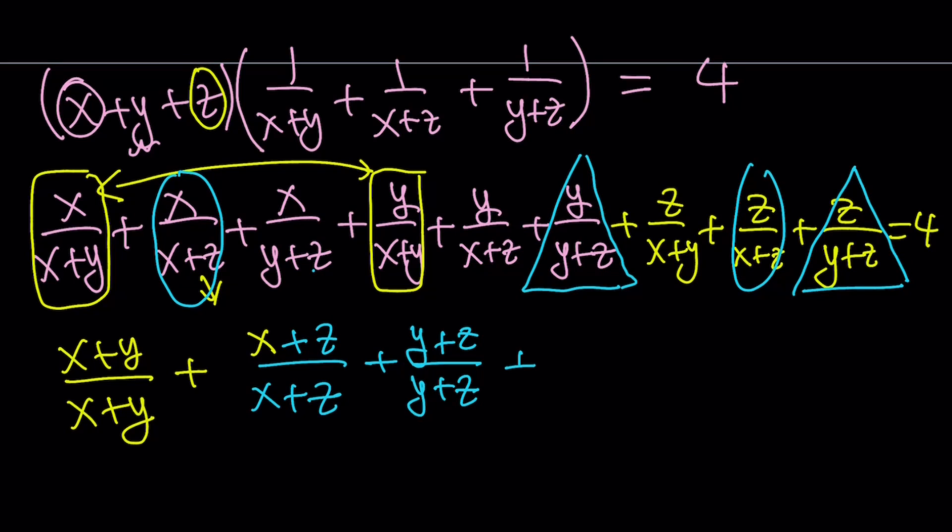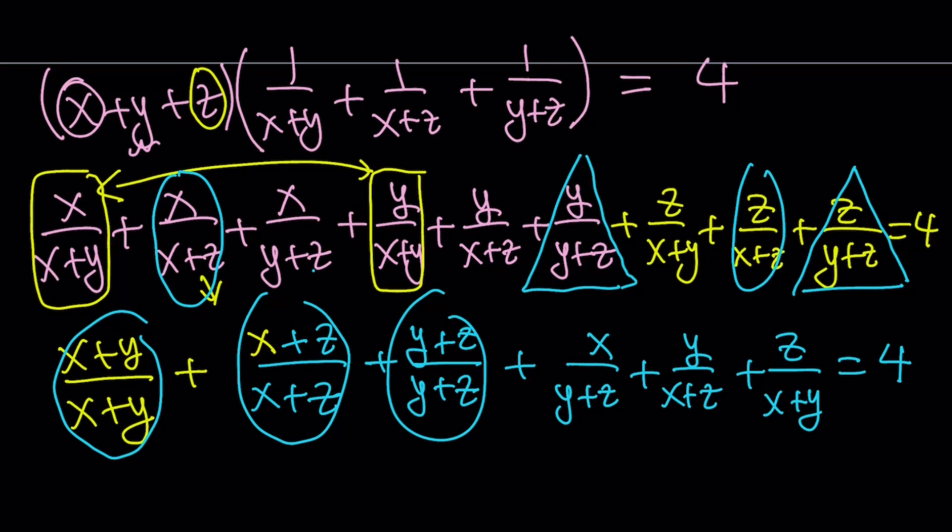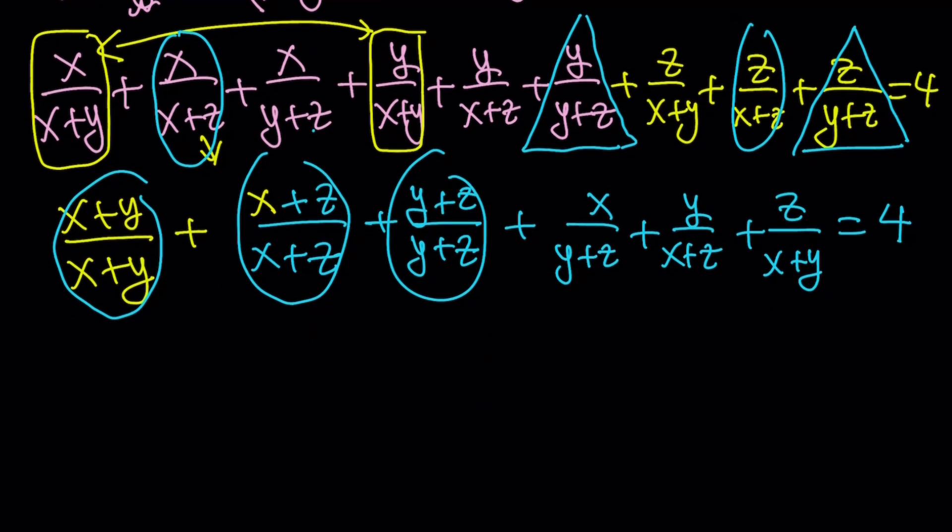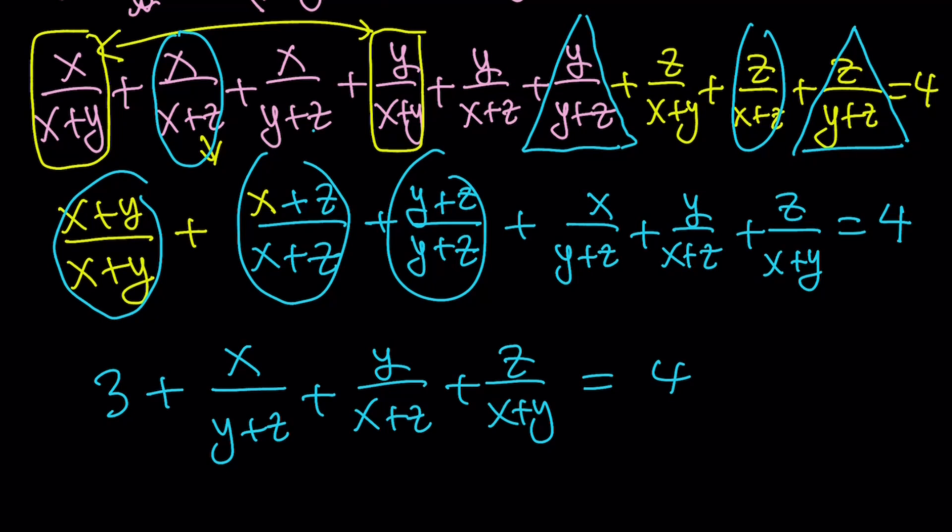And what else do we have left? We have x over y plus z plus y over x plus z, and z over x plus y left. Those are the leftover terms, and that is equal to 4. So this is 1, this is 1, and this is 1. 1 plus 1 plus 1 is equal to 3. So we get 3 plus x over y plus z plus y over x plus z plus z over x plus y is equal to 4. If you subtract 3 from 4, you get 1.